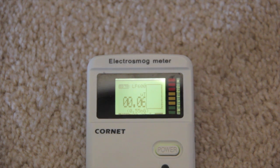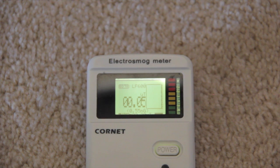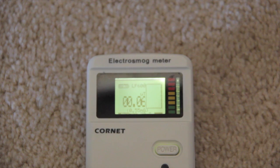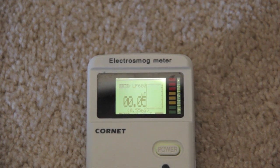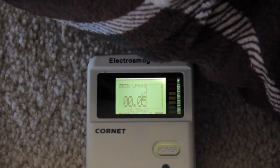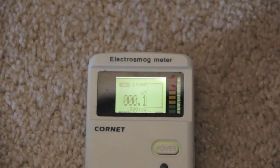So here we see the Cornet meter without the electric blanket on. The magnetic fields right now are 0.05, 0.06. Here we turn on the blanket on medium, and it goes high. Take it away.